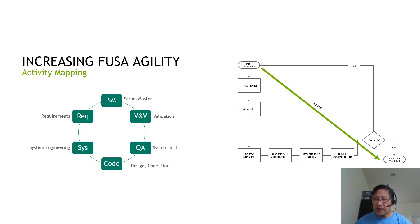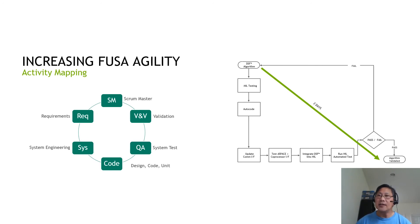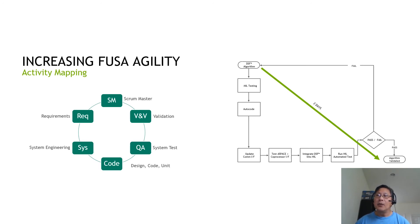The development process on the coprocessor needed to be repeated whenever algorithms were updated. Changes in interfaces between the coprocessor and ECU required driver changes and validation. As you can see from the activity map, interface changes required model-in-loop testing and code generation, updating all COM interfaces, testing integration of the DSpace and the coprocessor, integrating into the HIL bench, running automated tests with pass/fail criteria — and if the algorithm passed it was validated, otherwise it failed. The whole turnaround time for this activity map was about two days.